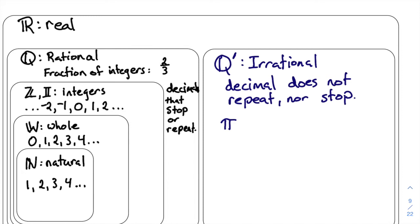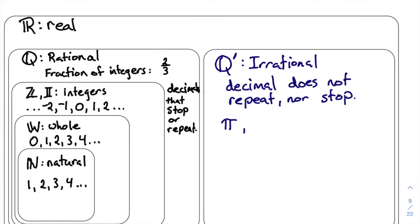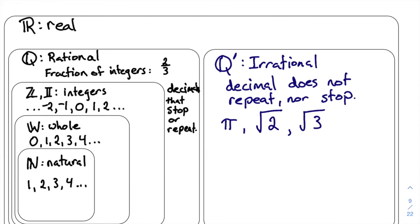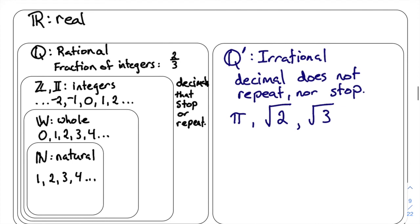Pi is the ratio of the circumference of a circle to the diameter — the decimal does not repeat and does not stop. The square root of two is an irrational number; the square root of three is also irrational. The square root of four is not irrational — in fact, the square root of four goes way over into the natural numbers because it equals two. But the square root of five would be irrational, and the cube root of two would also be in here. So these are irrational numbers.